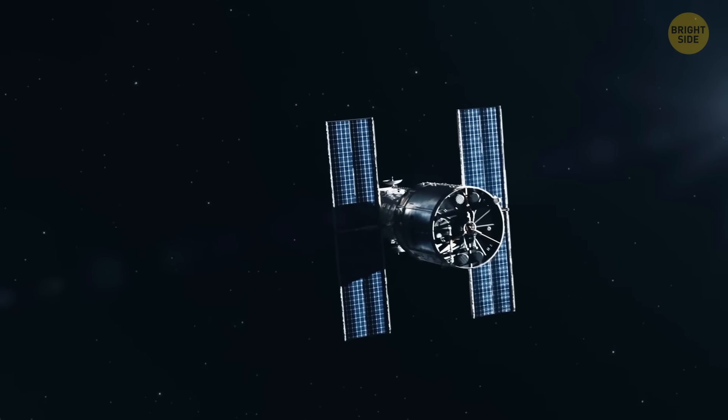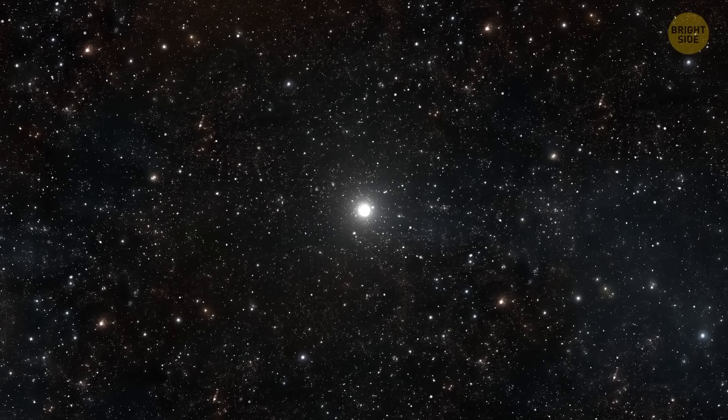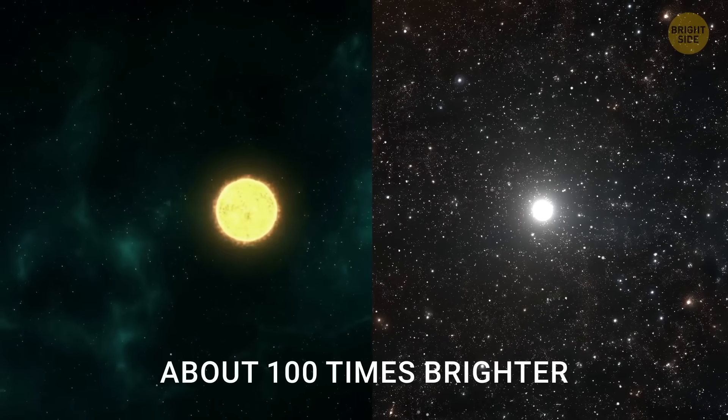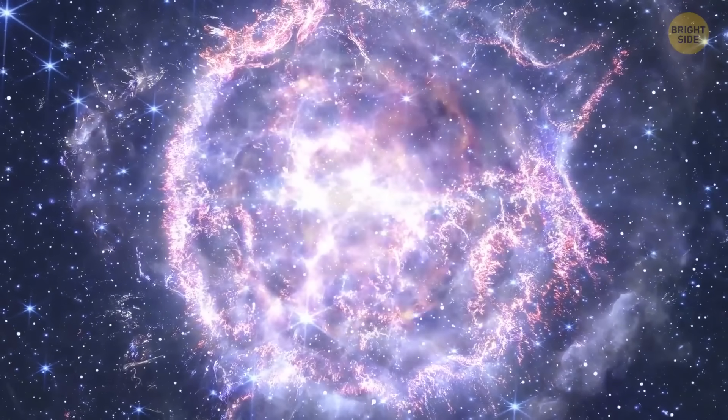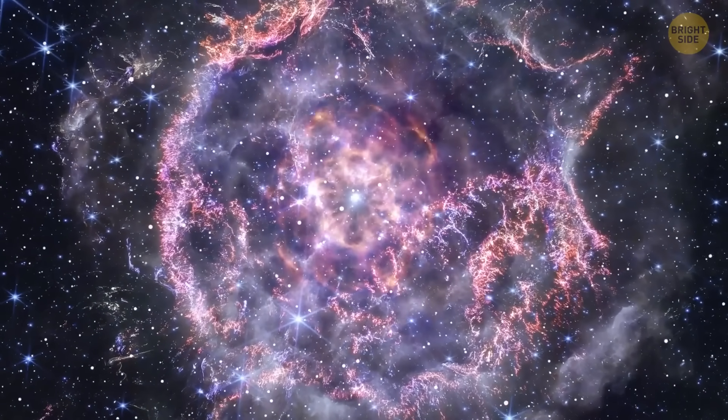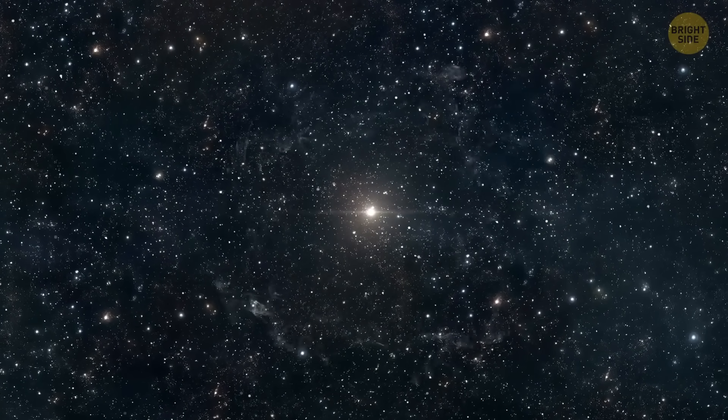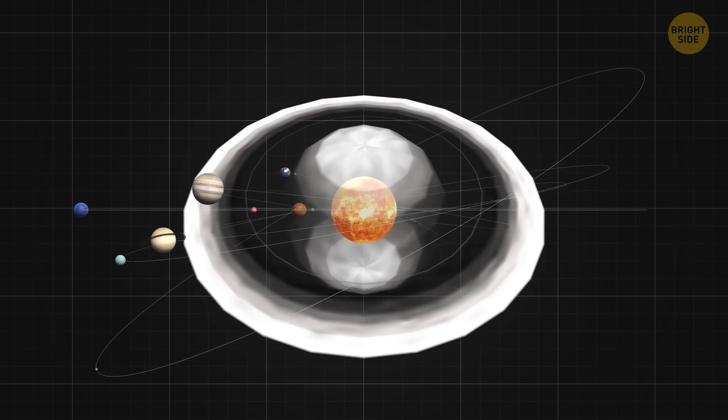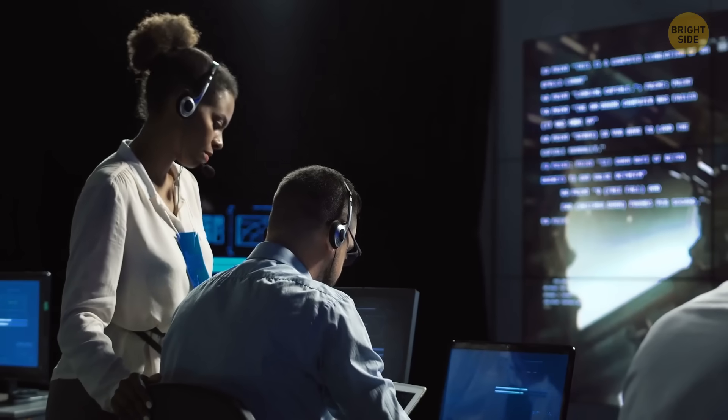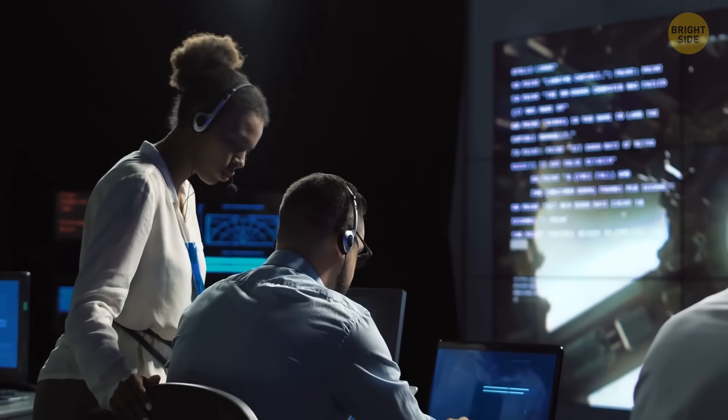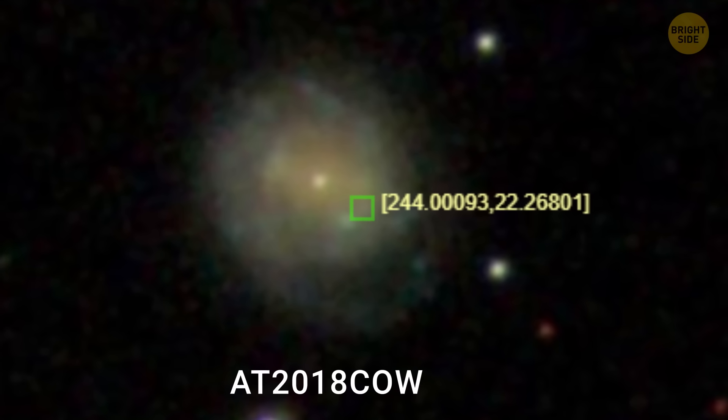This all started back in 2018. One day, telescopes saw a giant boom far away in space. That explosion was incredibly bright, about 100 times brighter than a normal supernova. The strange thing was that normal supernovae take weeks or even months to fade away. But that one went from kaboom to poof, gone, in just a few days. It got extremely hot and huge, about the size of our whole solar system, and then vanished like it never happened. Scientists were seriously confused. They named the explosion the cow because its official name was too long and not exciting at all.